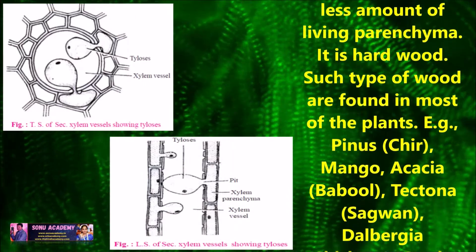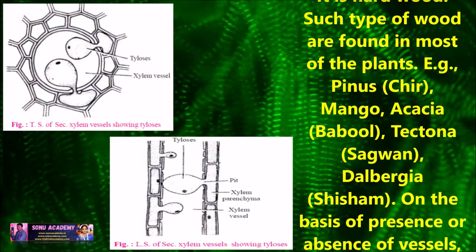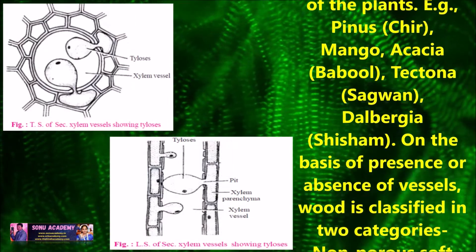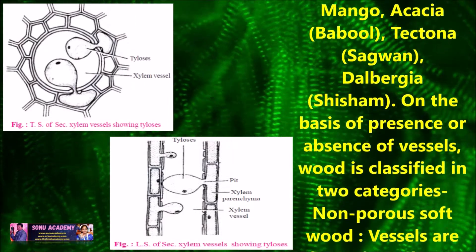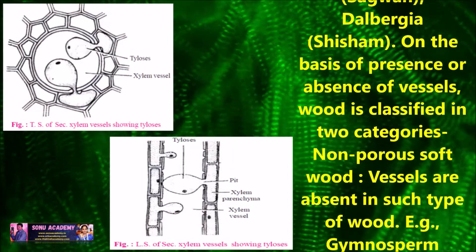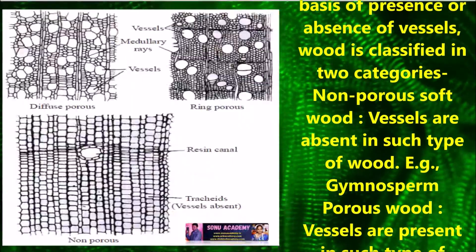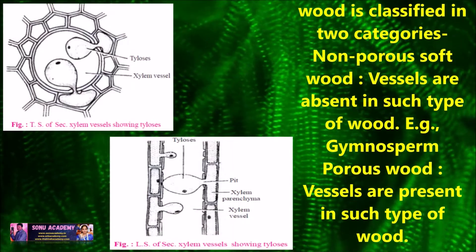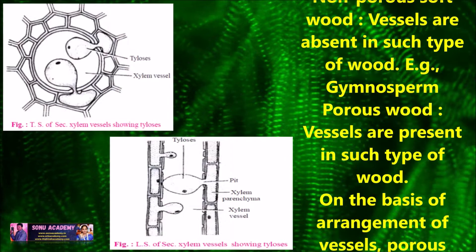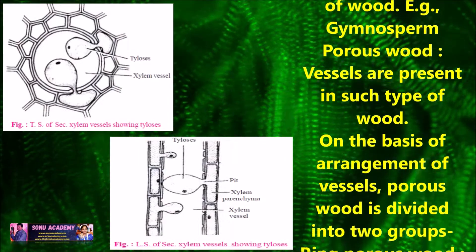On the basis of presence or absence of vessels, wood is classified into two categories. Non-porous softwood: vessels are absent in such type of wood; examples are gymnosperms. Porous wood: vessels are present in such type of wood. On the basis of arrangement of vessels, porous wood is divided again into two types.